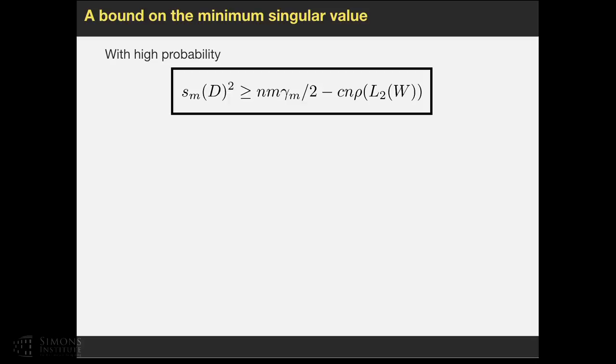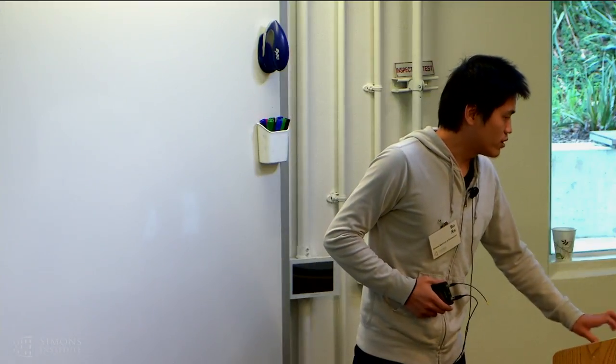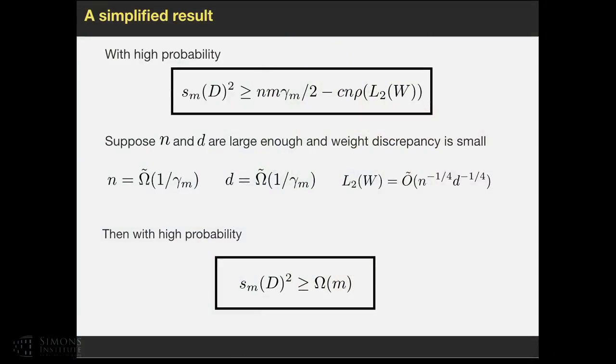To put the two terms together, we have a lower bound on the singular value of D. For simplified result, suppose N, which is the number of hidden units, and D, which is the input dimension, are large enough, and the weight discrepancy L2W is small enough. In particular, if N is 1 over gamma M and D is 1 over gamma M, and L2W is in this order, then we have a simplified bound. With high probability, the smallest singular value is lower bounded by linear in number of data points.